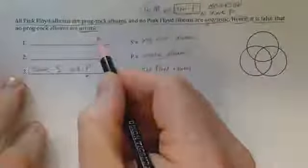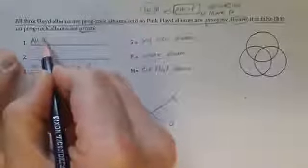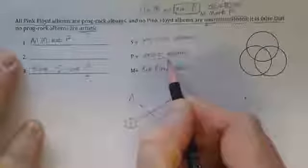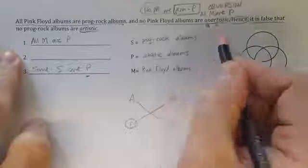And so, to complete the obversion, we convert no to all. Because that keeps the quantity, the universal quantity, but it changes the quality. Now, what this means then is our major premise needs to be stated as all M are P. All Pink Floyd albums are artistic albums.